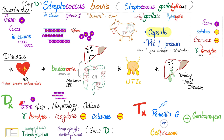How can we diagnose it? Gram stain — it is gram-positive. Morphology shows chains of gram-positive cocci. You can culture it, especially via blood culture. It is gamma hemolytic with no hemolysis, coagulase negative, and catalase negative. Biochemical tests can be used to identify the specific carbohydrate or group D antigen for this group of bacteria.